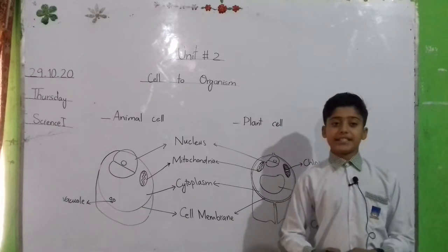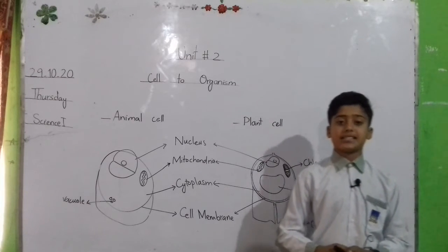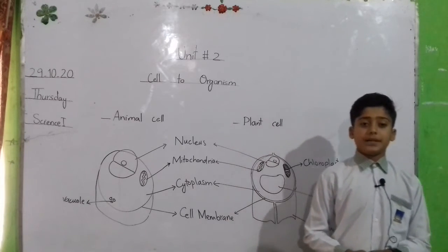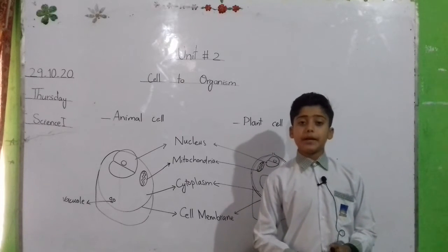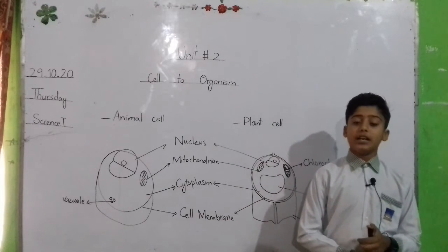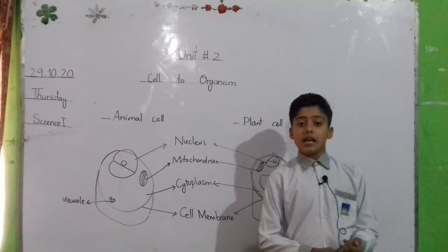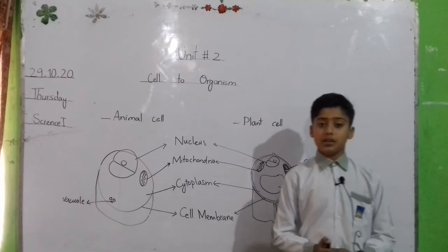Chloroplast. It is a dish-like structure present in only plant cell. It is absent in animal cell. It contains a pigment of green color called chlorophyll. It helps in photosynthesis and gives green color to the plant.